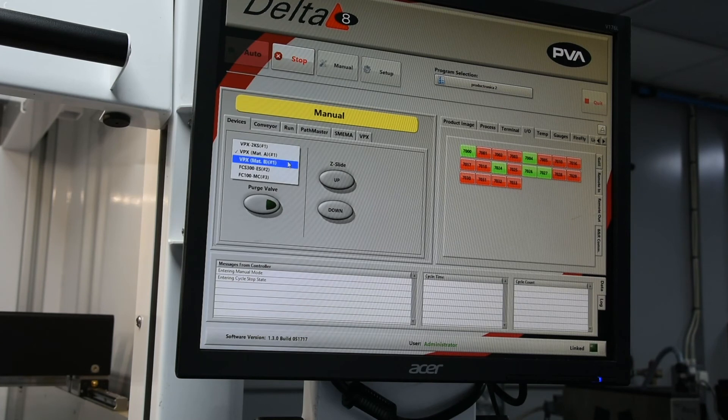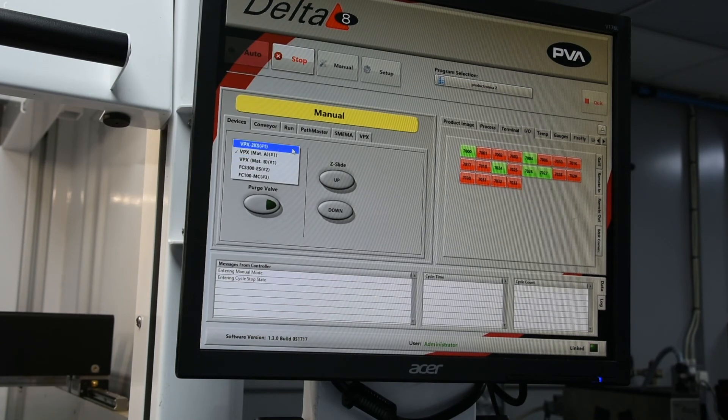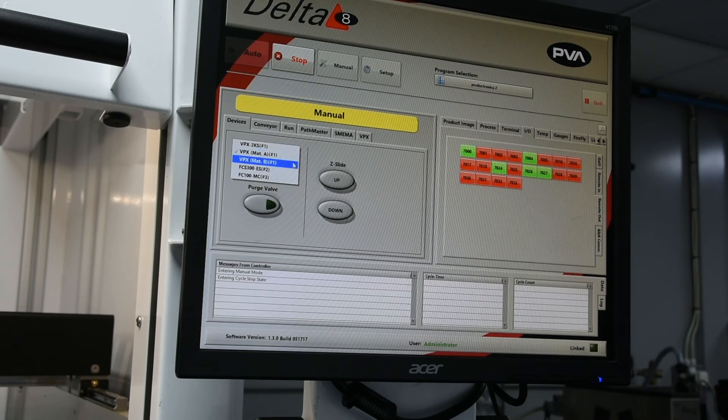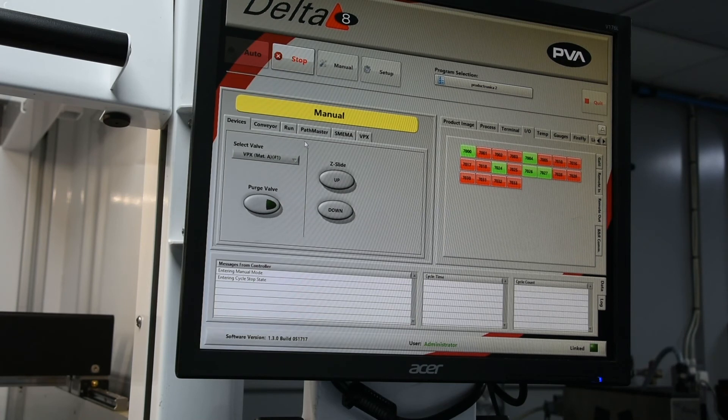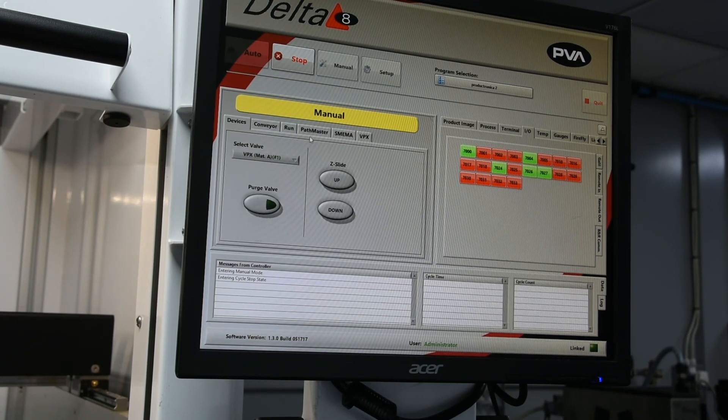The key difference with 2K materials versus traditional coatings is the setup within the program itself. You will notice in the example on our PVA machine that there are additional tabs for the 2KPS valves, with options for the coating only, reaction agent only, or mixed material. There is also the all-important purge button.